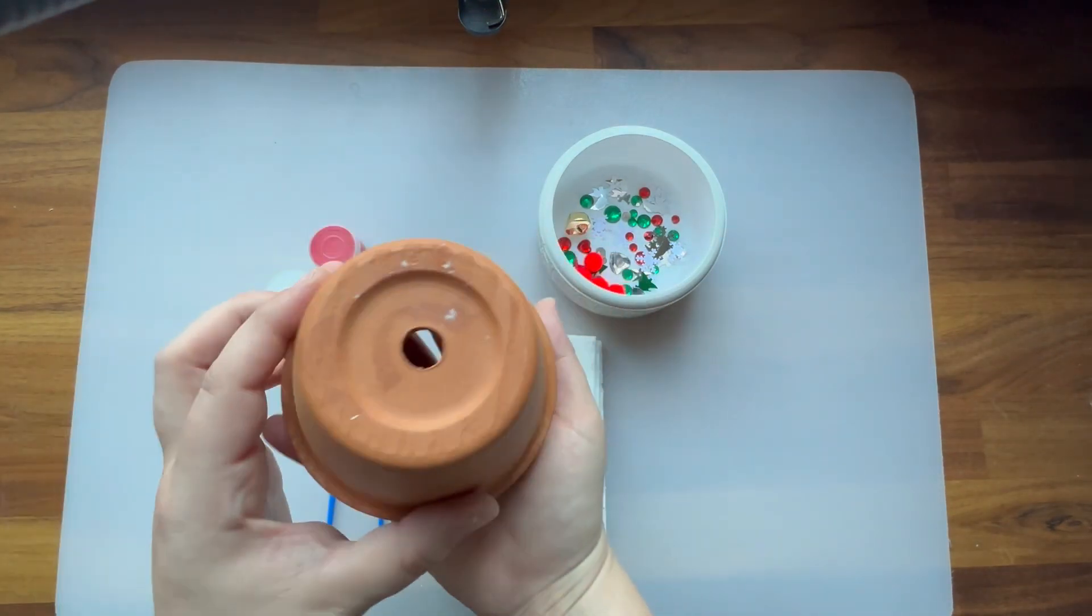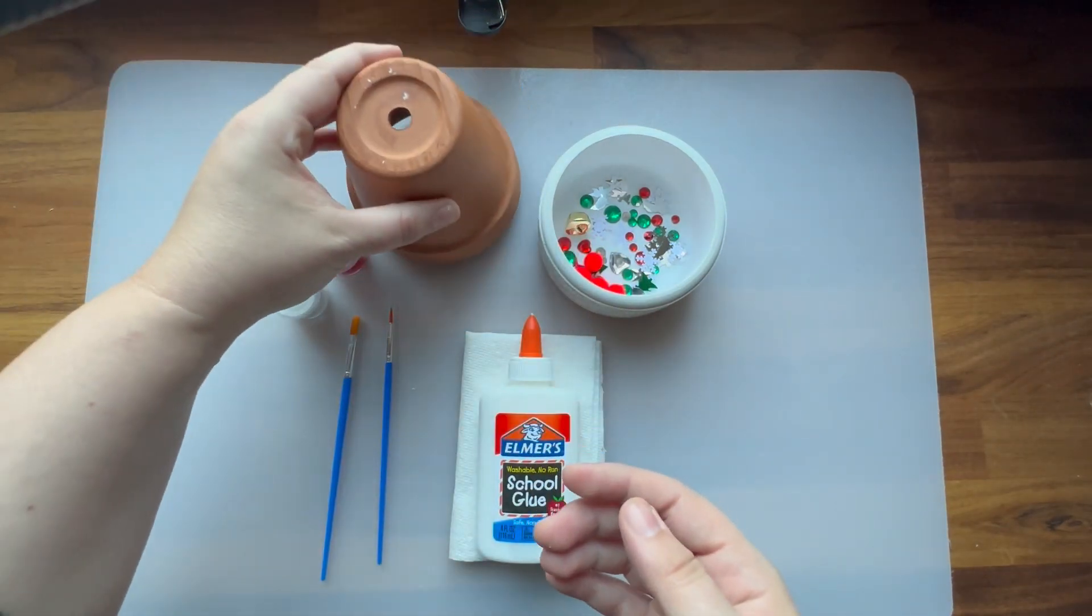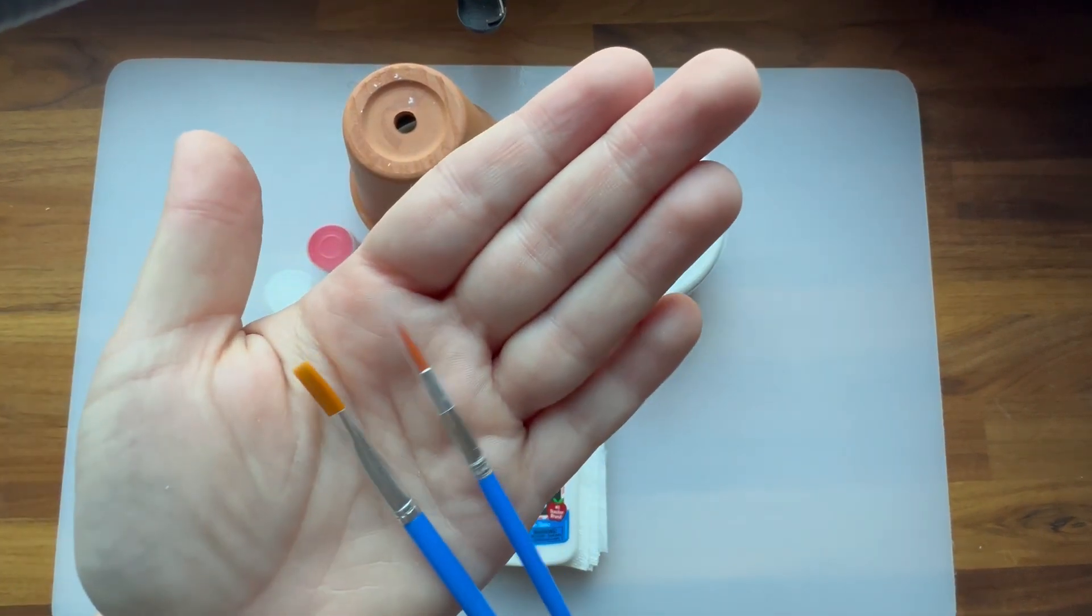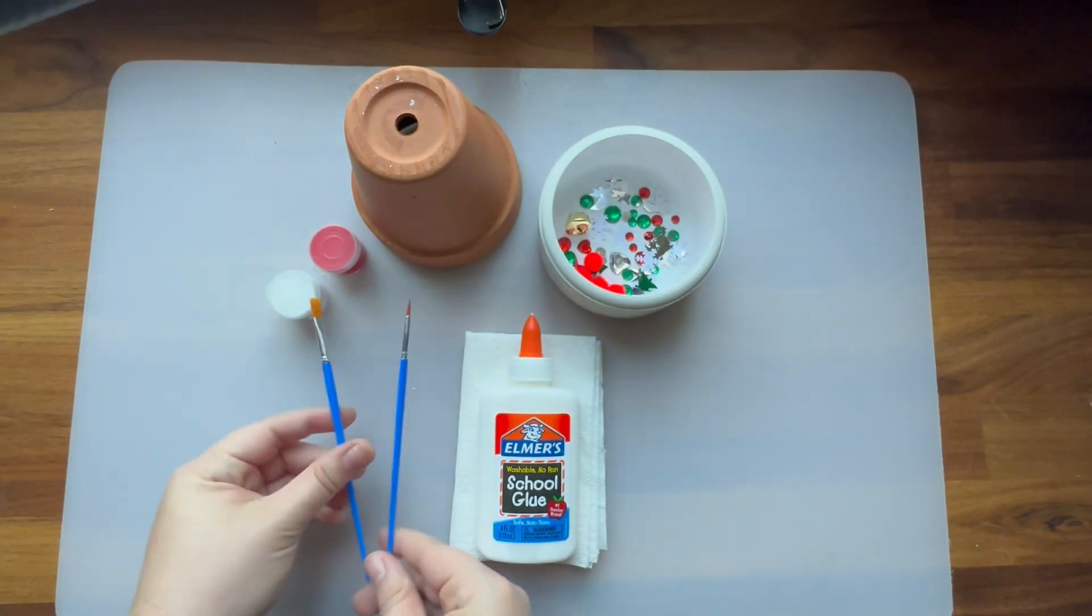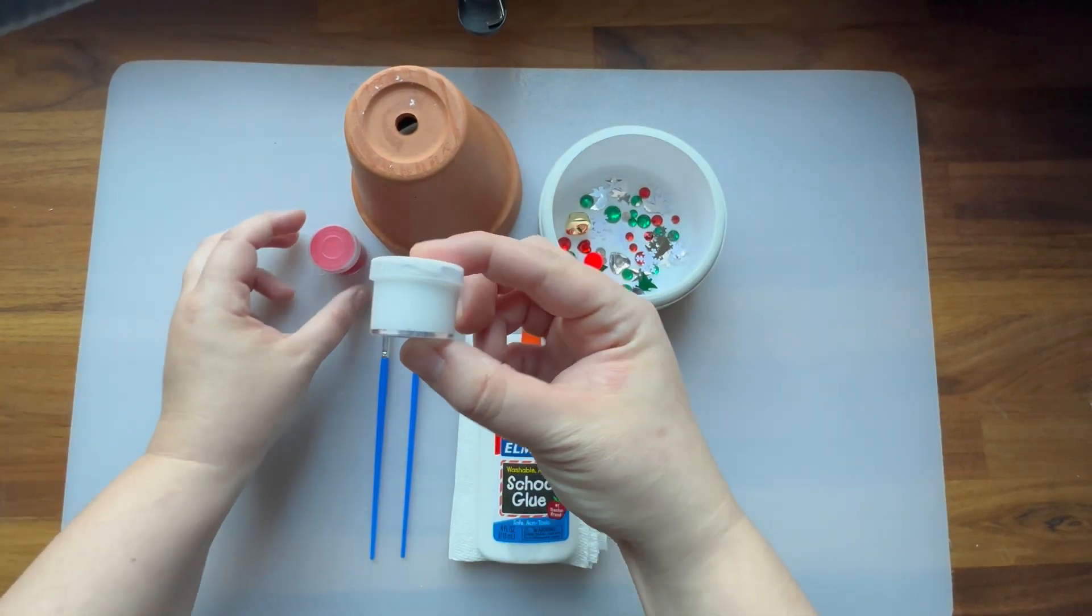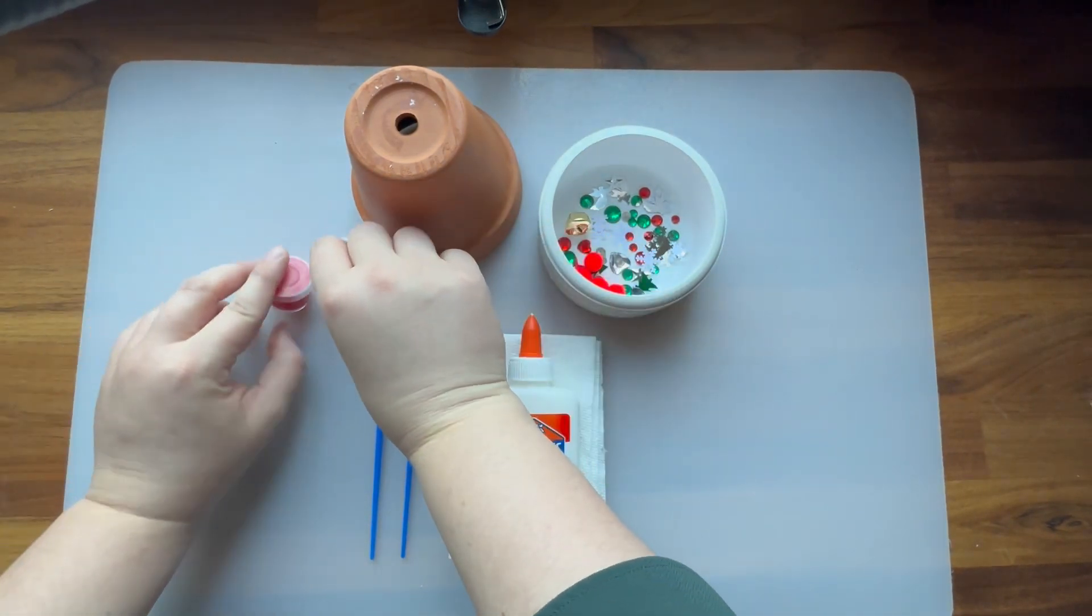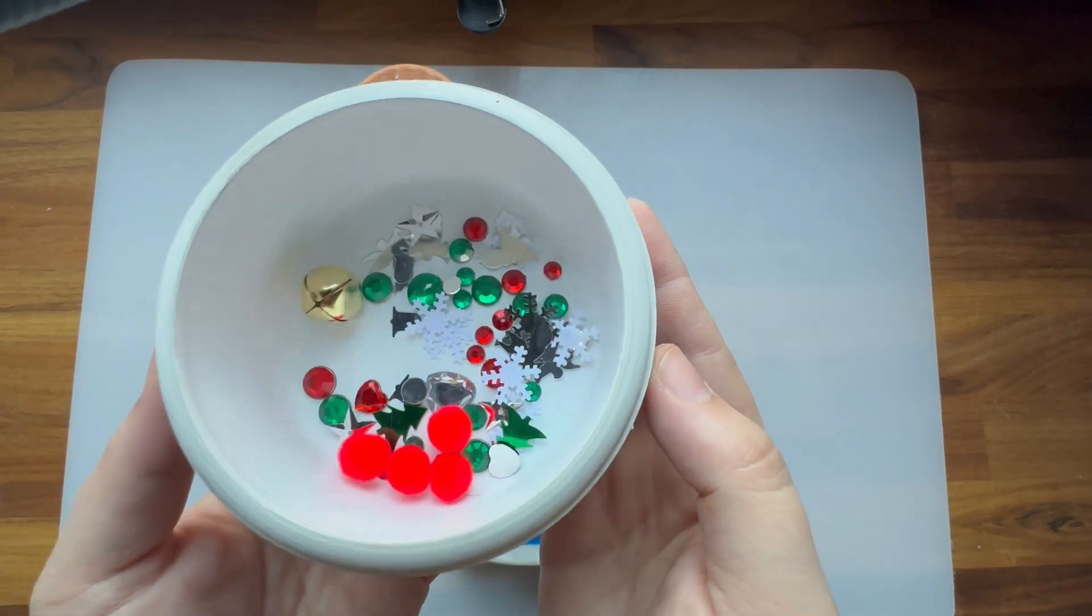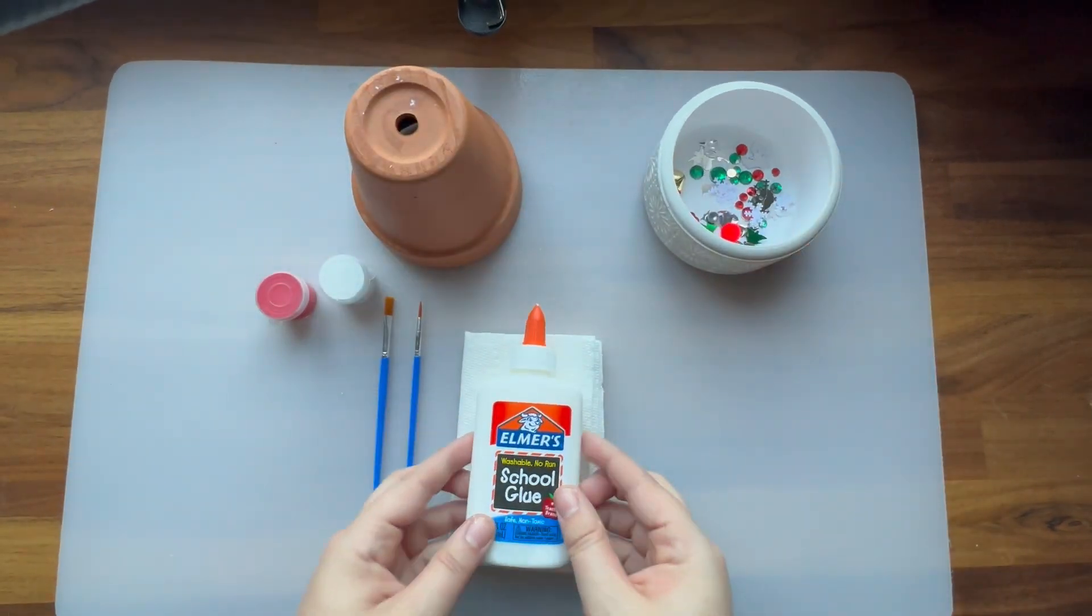Each kit will include one 4-inch terracotta pot, one small flat paintbrush and one detail brush, red and white or green and white craft paint, and an assortment of decorative items like sequins, pom-poms, bells, and rhinestones.